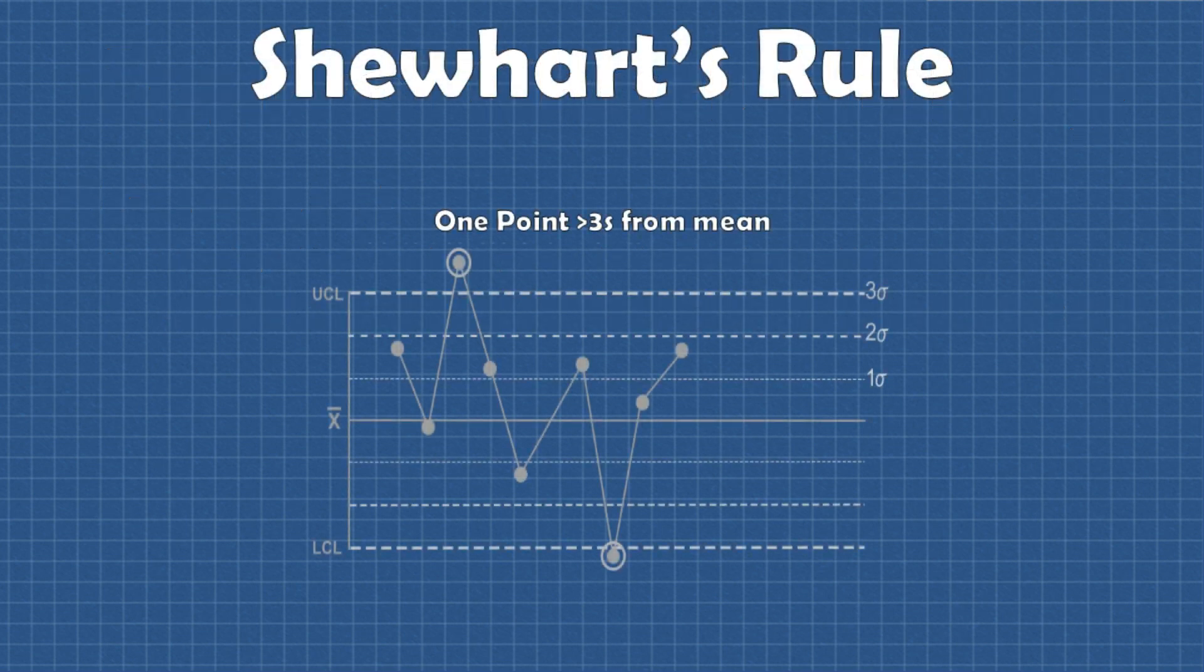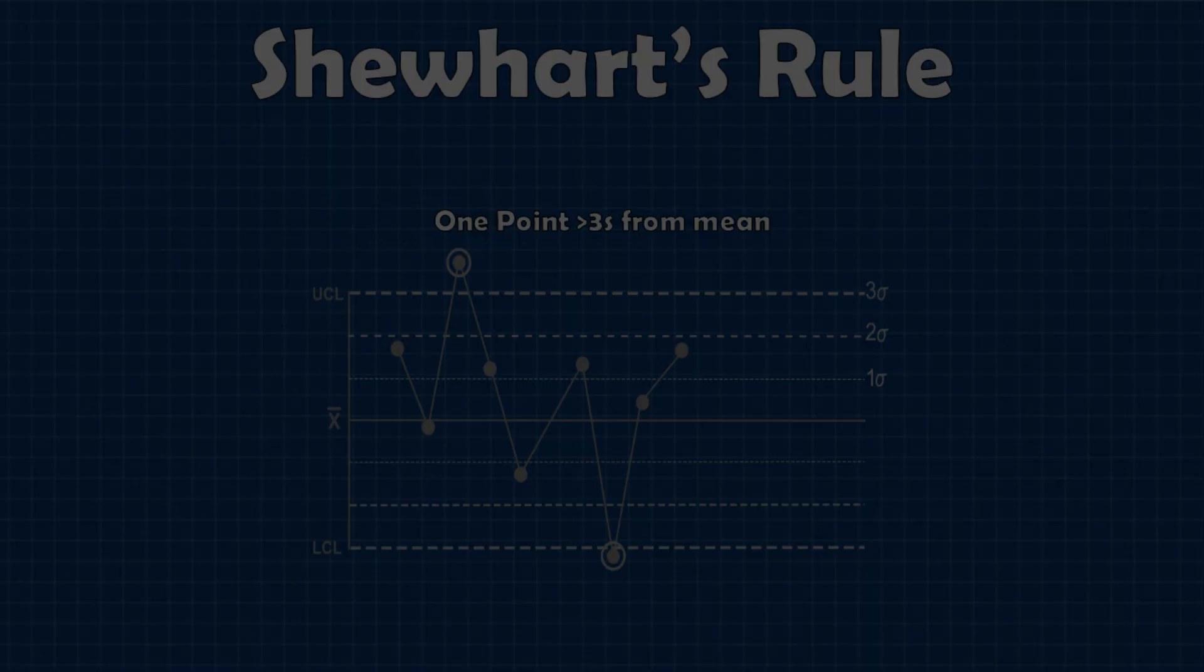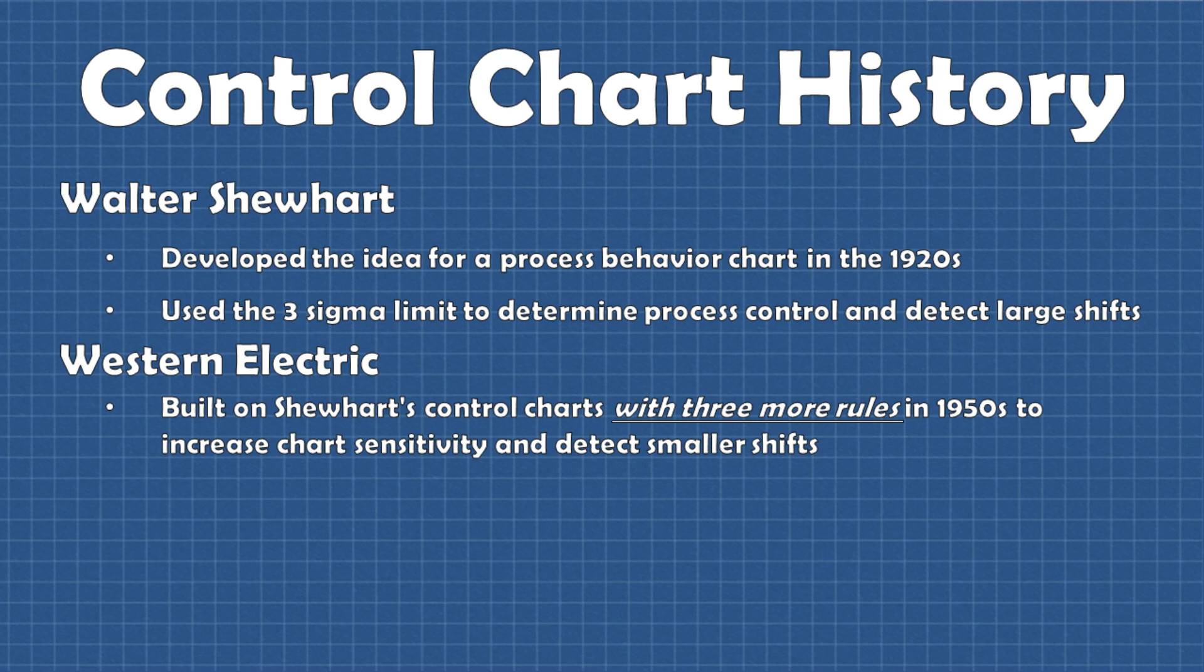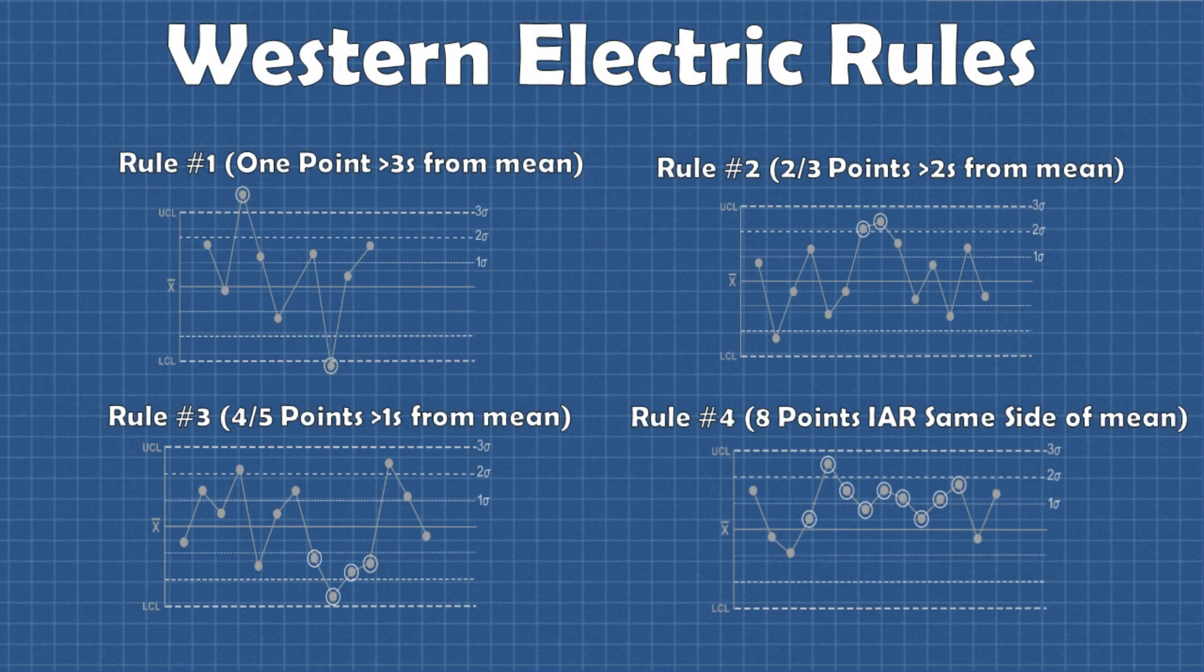He used the three sigma limits to detect large process shifts. So if any data points fell outside these limits he could be pretty confident that there's a special cause behind that shift. Then in the 1950s Western Electric developed a standard for process control charting that built upon Shewhart's method.